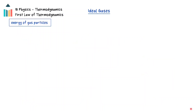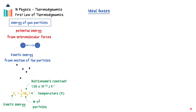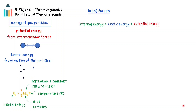Particles of a gas have potential and kinetic energy. The potential energy is due to the intermolecular forces, and the kinetic energy is because the particles are constantly in motion. The average kinetic energy of the particles is directly proportional to the temperature of the gas, as shown through the formula: kinetic energy is equal to 3/2 times the number of particles times Boltzmann's constant times the temperature in Kelvin. The internal energy, capital U, of a gas is the sum of the particles' potential and kinetic energies.